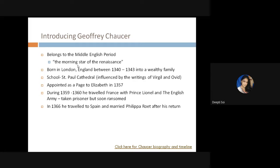In 1366 Chaucer traveled to Spain, and after returning he married Philippa Roet, who was also an attendant to the queen. We don't have many details about his domestic life since historians were unable to record them. Whatever details we do have about Geoffrey Chaucer exist because he was an official court worker, so some written records from official documents survive — unlike William Langland, about whom we know almost nothing.